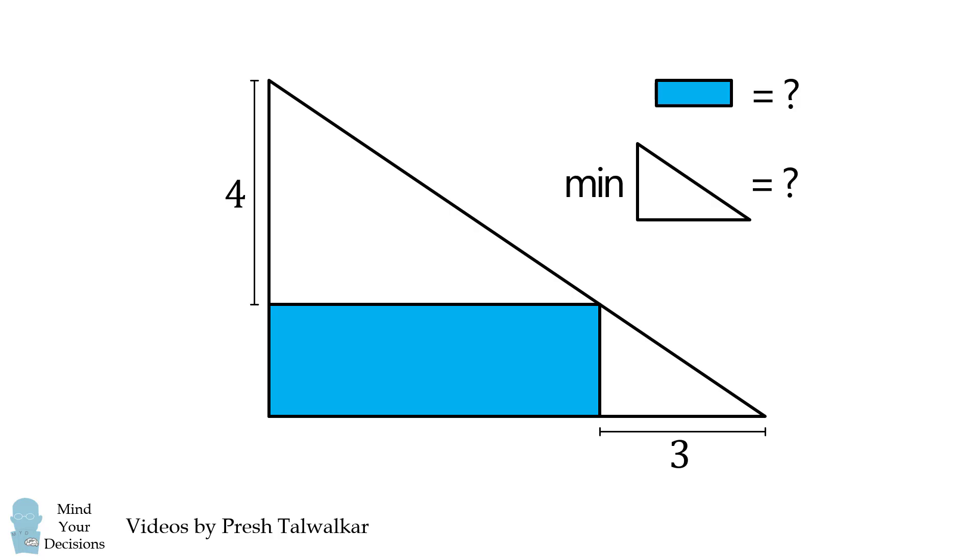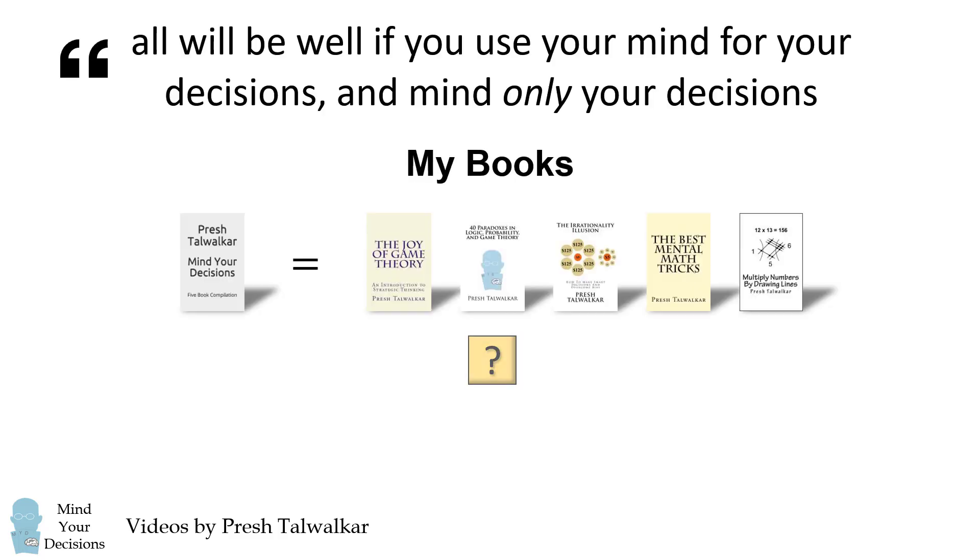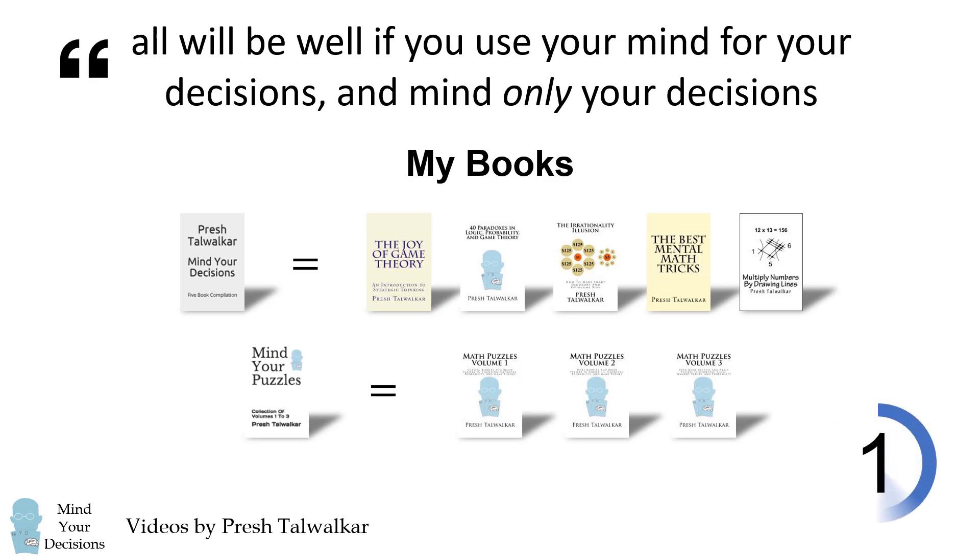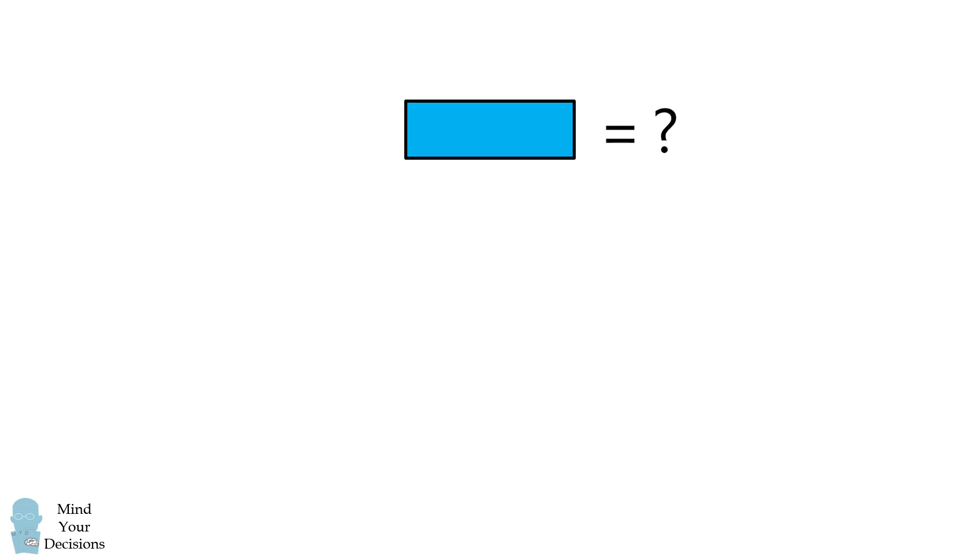Pause the video if you'd like to give this problem a try. And when you're ready, keep watching to learn how to solve this problem. We will first solve for the area of the rectangle, and then we will solve for the minimum area of the triangle. So let's get started with part 1.